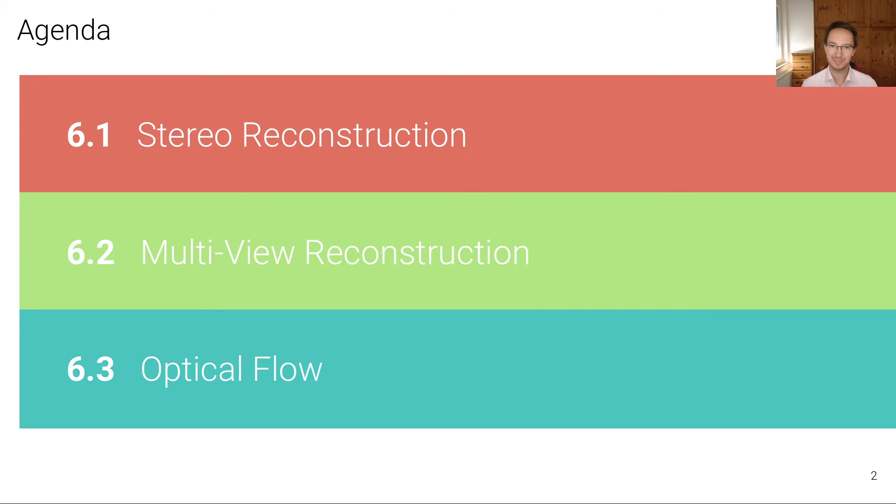we're going to discuss the optical flow estimation problem, which, like the binocular stereo estimation problem, is an estimation problem in the 2D image plane. But because the optical flow problem is typically formulated using continuous variables, we're going to use the gradient descent algorithm to do maximum a posteriori inference in the corresponding graphical model.